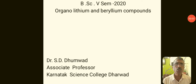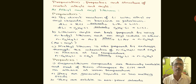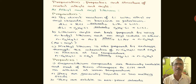Dear students, today let us study about the topic organolithium and organoberyllium compounds. In the last class, we studied metal carbonyls of binuclear compounds. Now these organolithium and organoberyllium compounds can also be explained as preparation, properties, and structure of metal alkyls and aryls. Let us first study alkyl and aryl lithium.